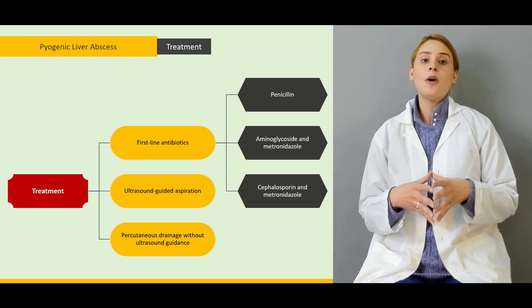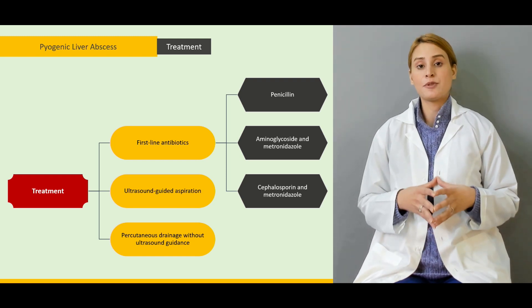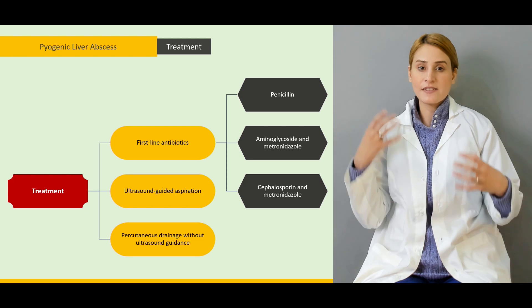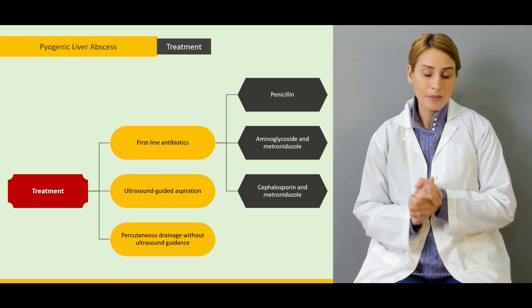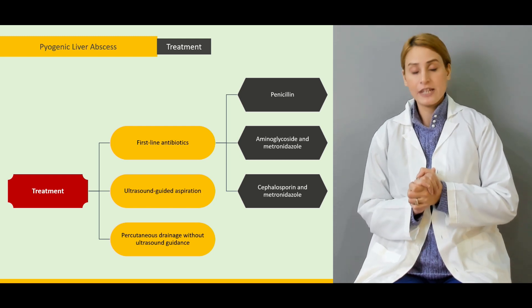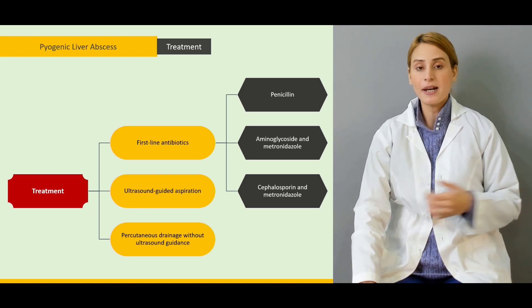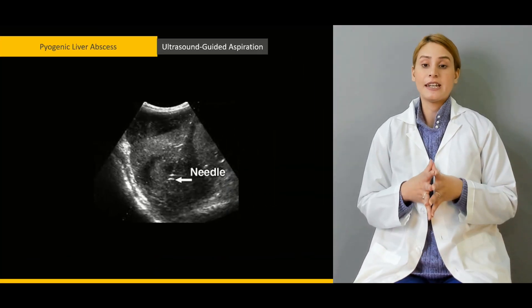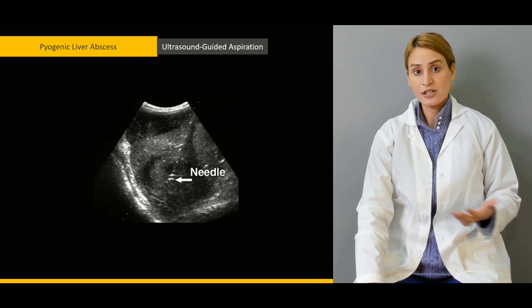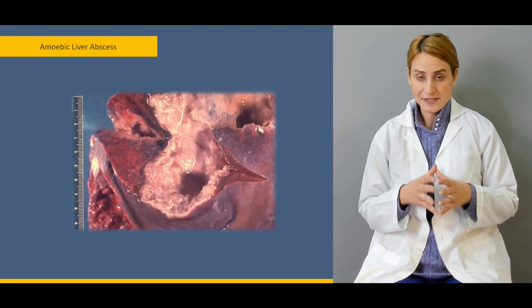We'll be talking about what kind of the first line antibiotics would be used. What is the role of the broad spectrum antibiotic? What gram negative cover or anaerobic cover we should be giving to these patients. We'll be talking about the ultrasound guided aspiration and then we'll be talking about the percutaneous drainage for the pyogenic liver abscesses.